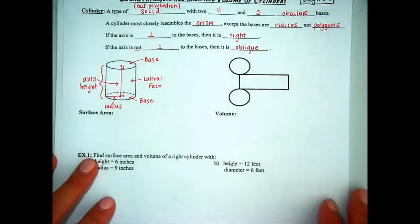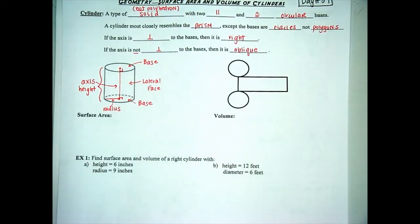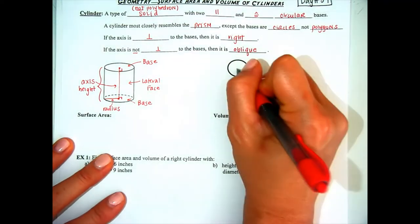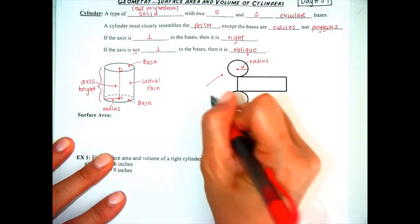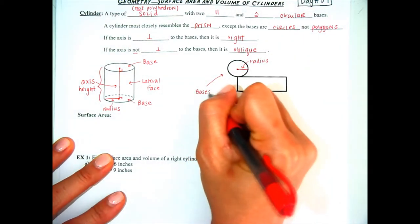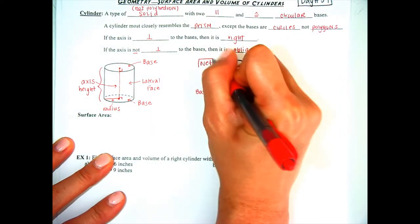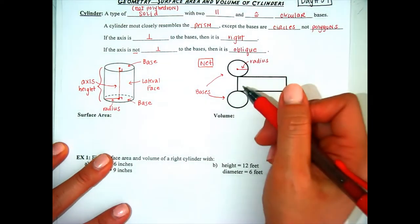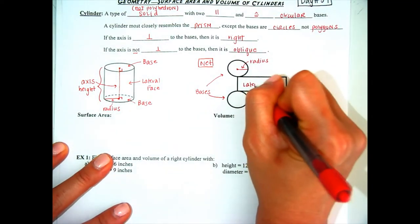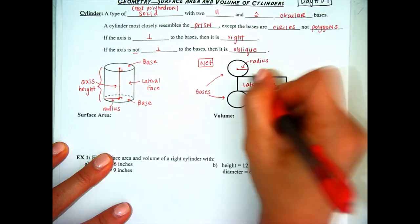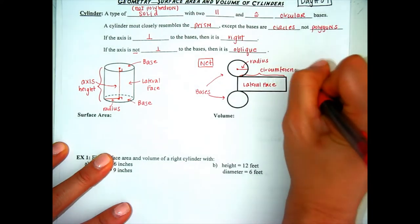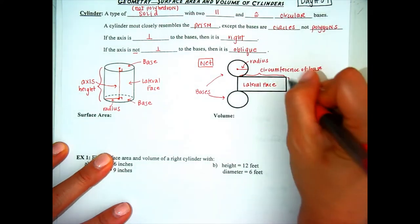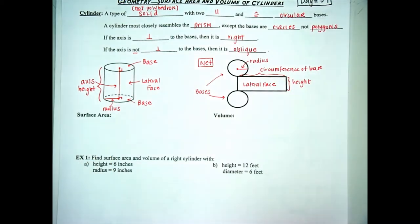Let's look at another version of a net here and look at the aspects of this particular two-dimensional view of a cylinder. We know that this is the radius. We know that these are the two bases. This is the two-dimensional net version of the three-dimensional cylinder. This is the lateral face. From here to here is the circumference of the base. This is the height.